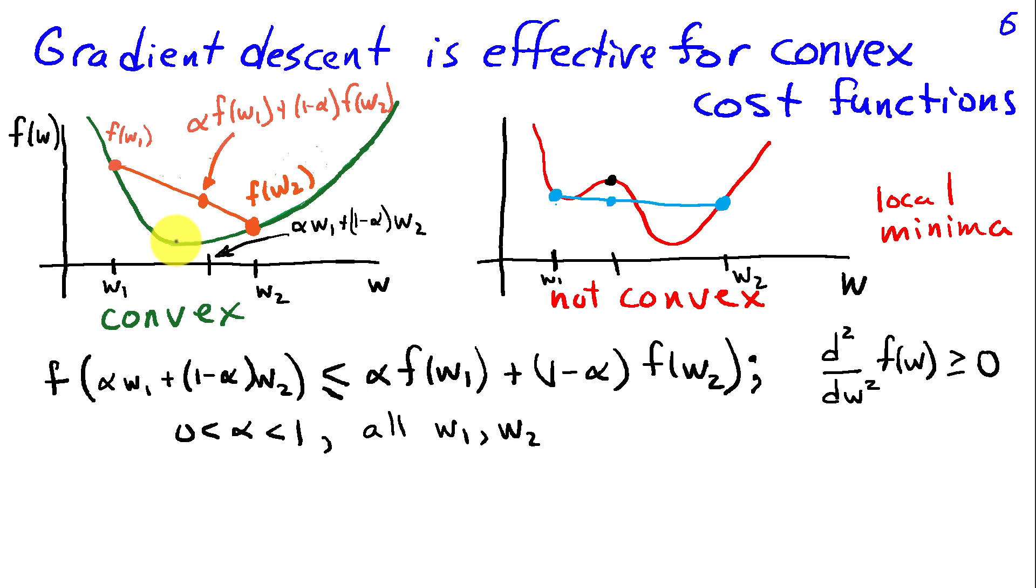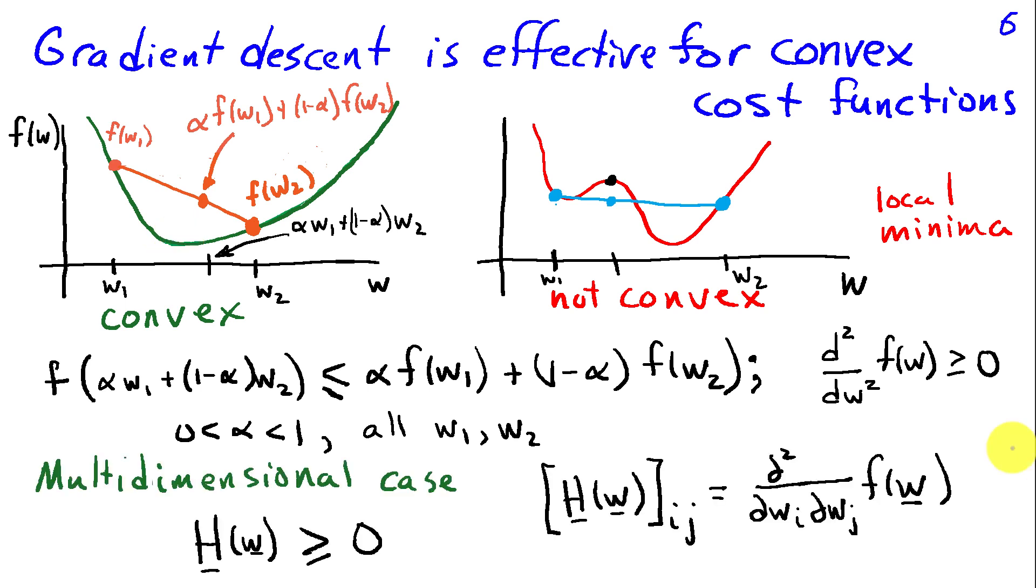Convex functions are always going to have a single global minimum, and the gradient is always going to point us to that global minimum. Now in the multi-dimensional case, a similar idea applies in that we can define a second derivative, although in this case it's a matrix because it's with respect to each of the coordinate directions, called the Hessian matrix, the second derivatives with respect to f in the various coordinate directions. And this Hessian matrix needs to be positive semi-definite for the cost function to be convex.